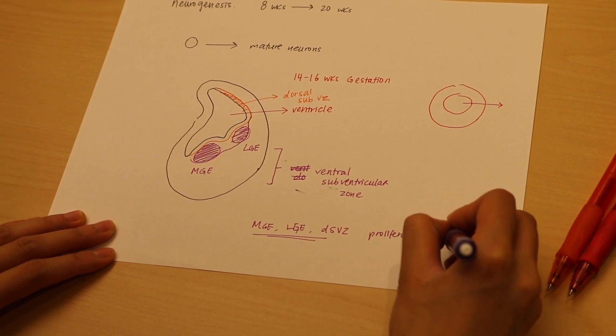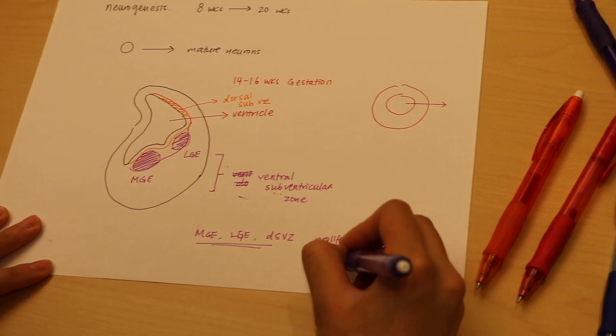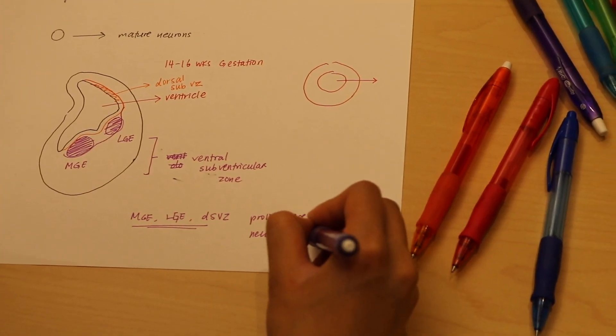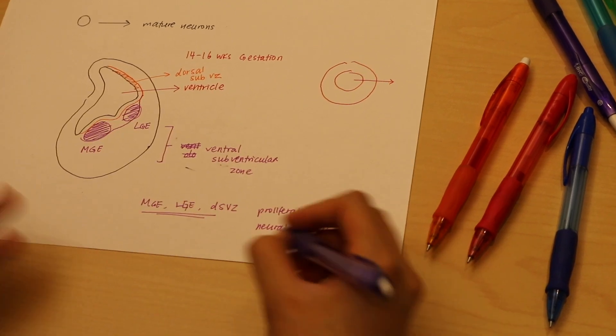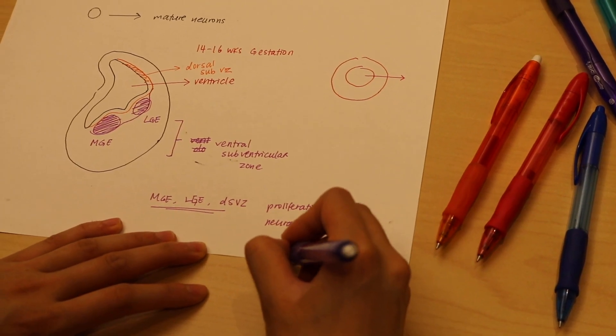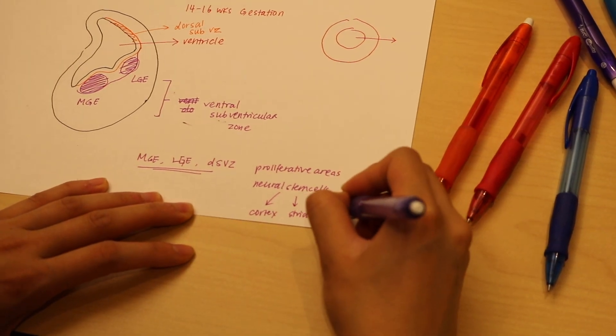And our dorsal subventricular zone, which I would call the DSVZ—these are all highly proliferative areas that contribute neural stem cells that eventually go on to form neurons of the cortex, the striatum, and other brain structures.